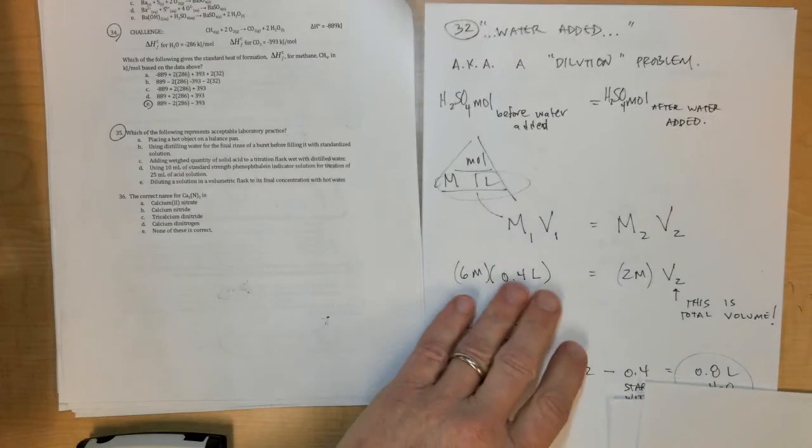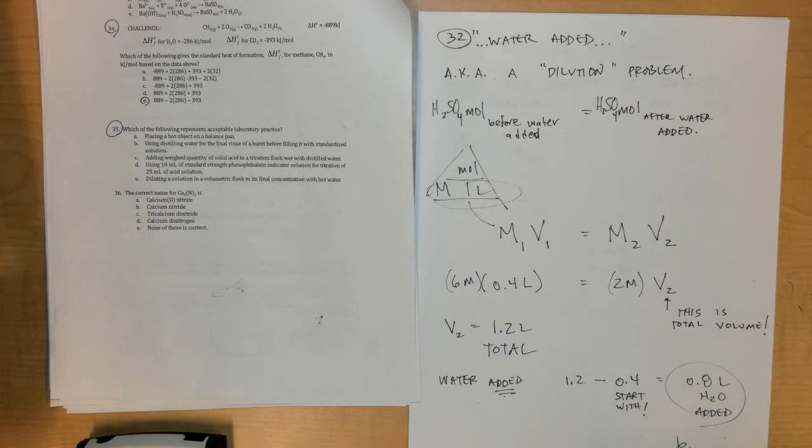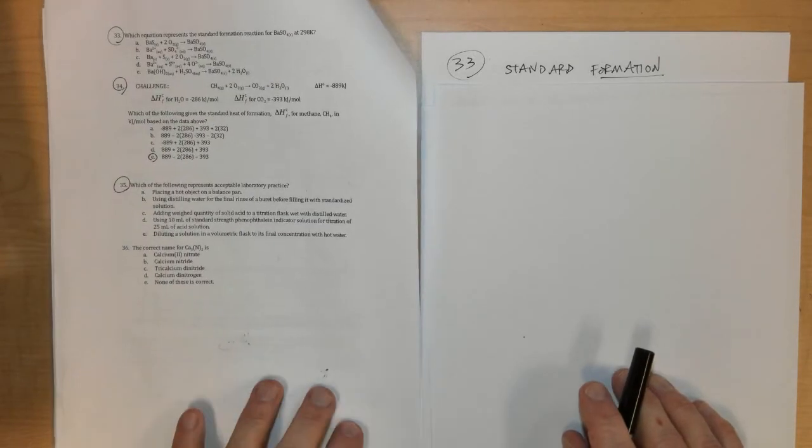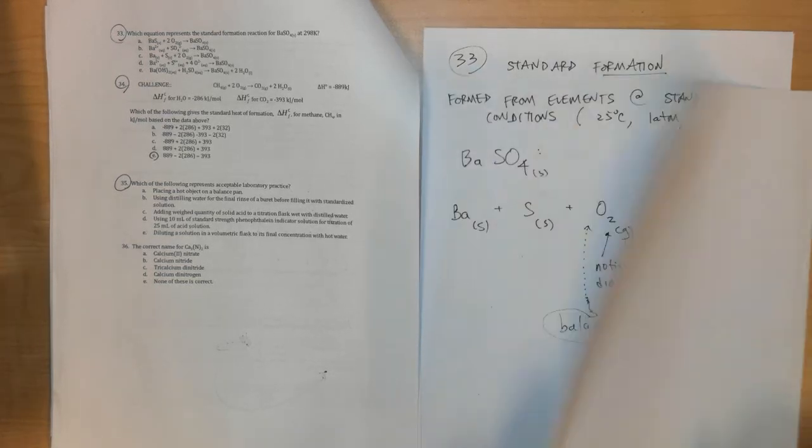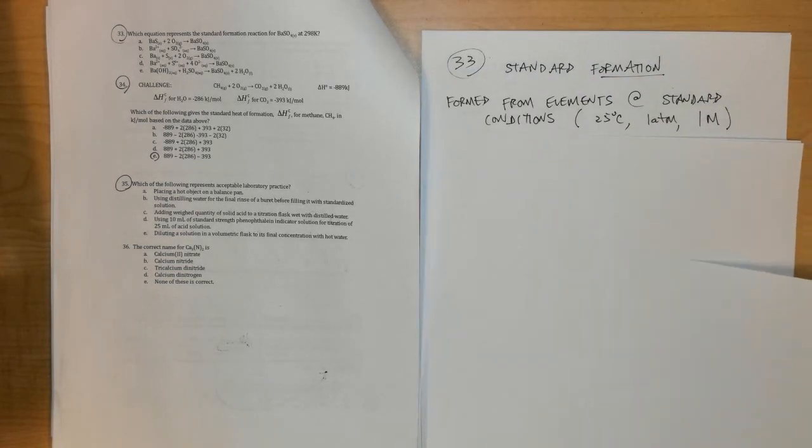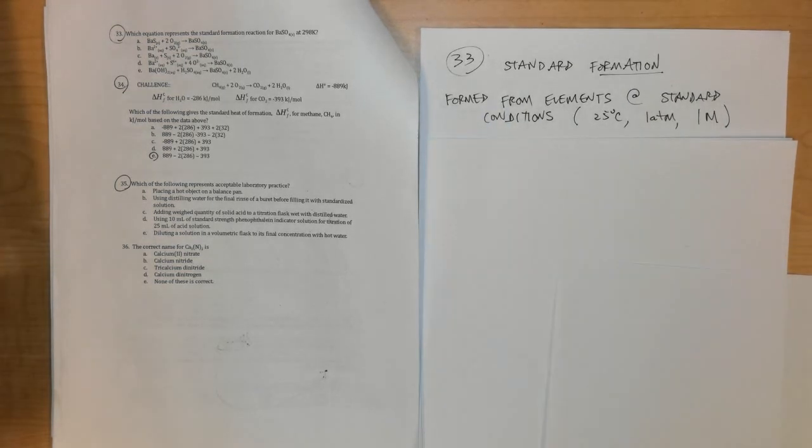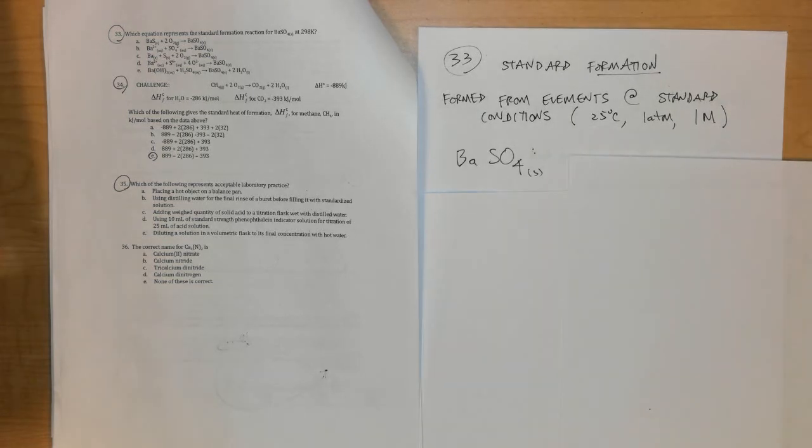The next one is number 33: Which represents the standard formation of BaSO4 at 298? So standard simply means that it's standard conditions - standard conditions are 25 degrees Celsius for thermodynamics, one atmosphere and one molar solution. Formation means it's formed from its elements at those conditions, and so I want to write an equation that allows me to make BaSO4 solid (because it's a solid at 25 degrees Celsius) formed from barium, sulfur, and oxygen, and I want to make sure that the equation is balanced.